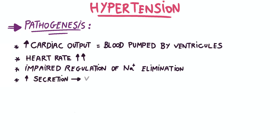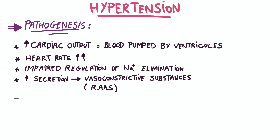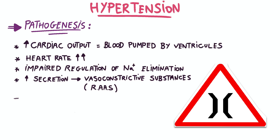Excessive secretion of vasoconstrictive substances, such as hormones involved in the renin-angiotensin-aldosterone system, can cause blood vessels to constrict, leading to increased resistance to blood flow and elevated blood pressure.